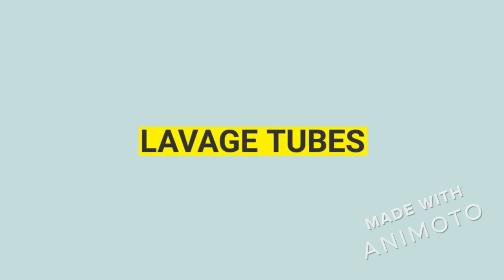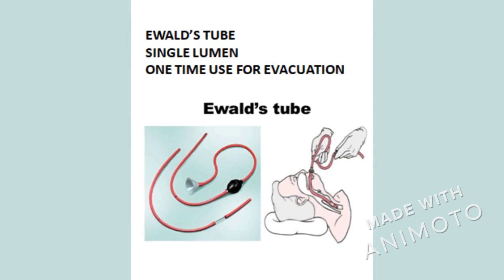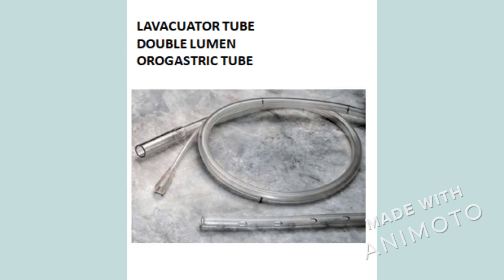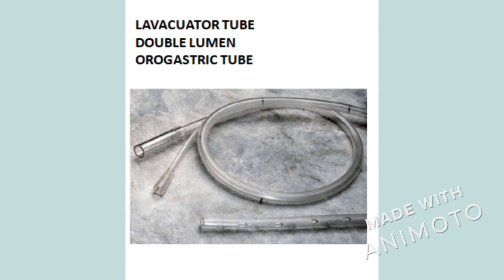The fourth and last type of tubes are the lavage tubes, also of two types. The first is the single lumen tube, the Ewald tube — a simple tube used one time for aspirating contents. The second is the evacuated tube, a double lumen tube: one lumen is used for inserting irrigating solution into the stomach, and the other is for emptying the stomach contents.